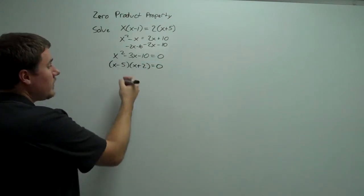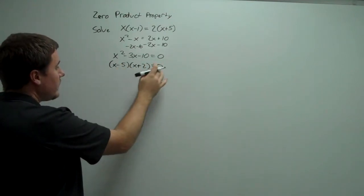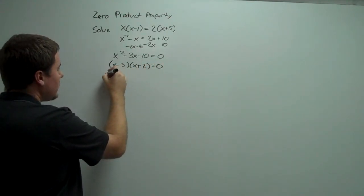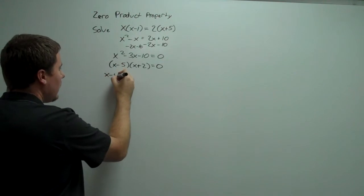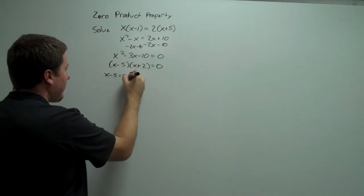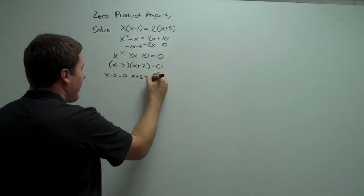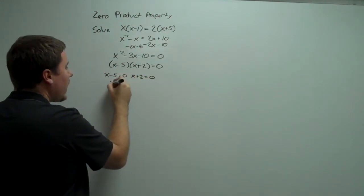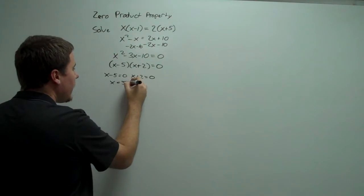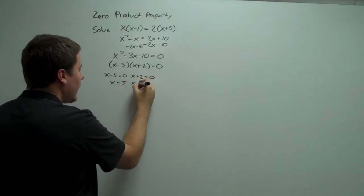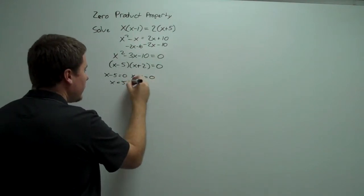Now, the zero product property — we set each of these individually equal to 0. And x is equal to 5, and x is equal to negative 2.